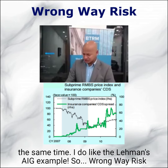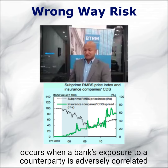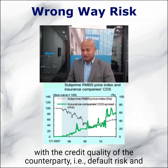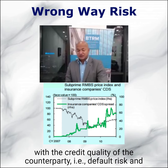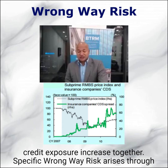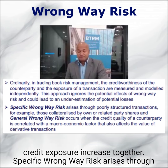I do like the Lehman and AIG example. Wrong way risk occurs when the bank's exposure to a counterparty is adversely correlated with the credit quality of the counterparty itself. Default risk and credit exposure increase together.